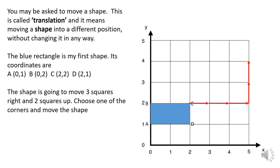Moving on to translation. You may be asked to move a shape — this is called translation. It means moving a shape into a different position without changing it in any way. This blue rectangle is our first shape, with coordinates (0, 1), (0, 2), (2, 2), and (2, 1).